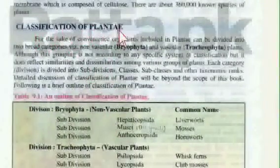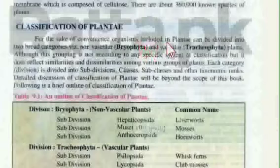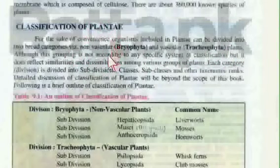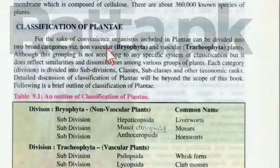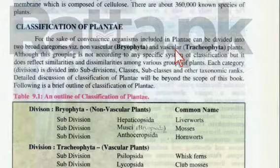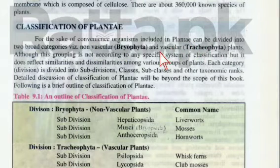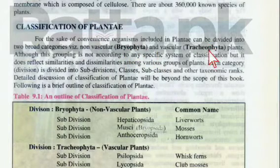Next is the classification of Plantae. For the sake of convenience, organisms included in Plantae can be divided into two broad categories: non-vascular (Bryophyta) and vascular (Trichophyta) plants. Non-vascular plants lack xylem and phloem, while vascular plants possess xylem and phloem.